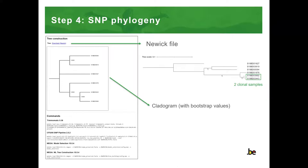I have also put a regular representation of the tree on the right side. As you can see, among the samples with identical cgMLST profiles, two of them were clonal and one has a slightly different SNP profile. At the bottom of the report, you can again see the commands that were used to obtain the results.